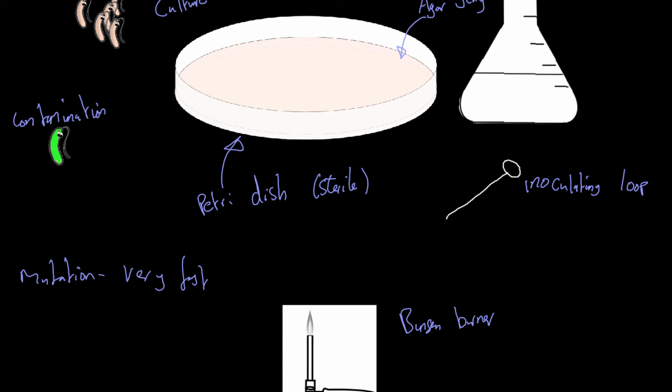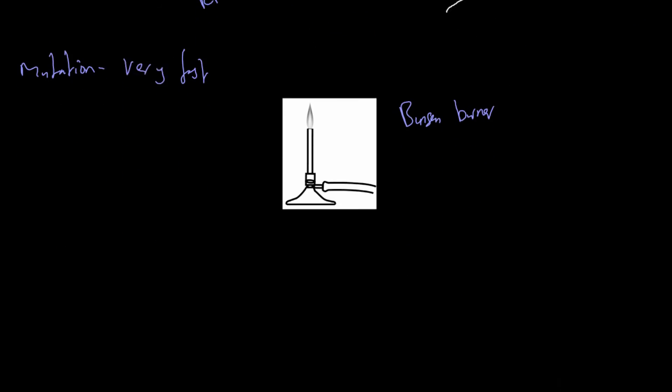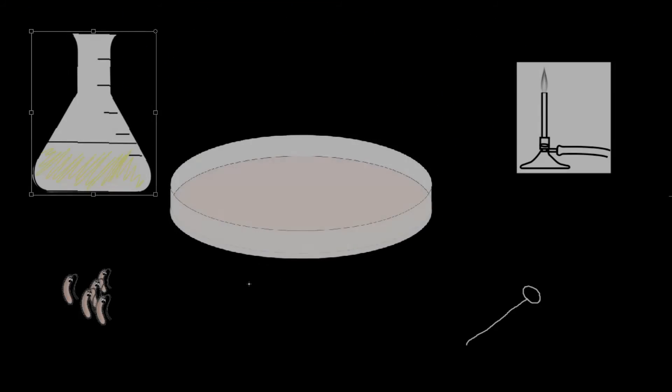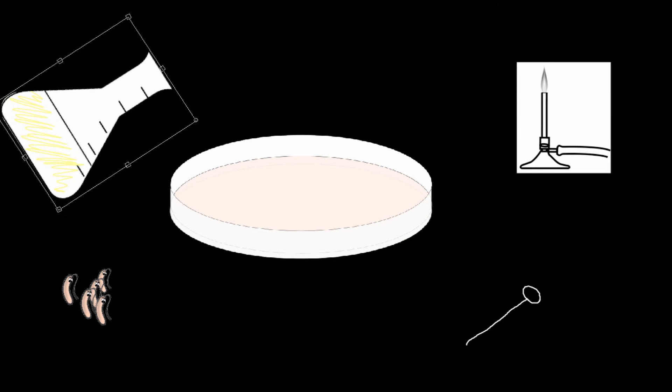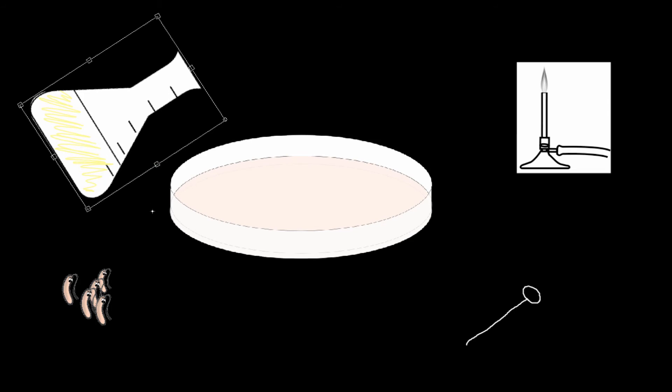So I think that's enough about the equipment we need and how we carry it out. Let's have a look at the process itself. Here we have all our equipment. We have our sterile beaker of hot agar, and what we're going to do is just pour that onto our petri dish. Now we have our agar on our plate. We let that settle and it solidifies into the agar jelly.